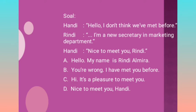Umumnya orang ketika berkenalan, pertama-tama yang disebutkan adalah namanya. Jadi: 'Halo, saya pikir kita belum pernah ketemu' — Rindi menjawab: 'Halo, nama saya Rindi Almira, saya sekretaris baru di marketing department.' Kenapa bukan B? Coba kita masukkan ke dialognya: 'Anda salah, saya telah bertemu dengan Anda sebelumnya' — tidak nyambung dengan 'saya sekretaris baru di marketing department.' Maka B salah.